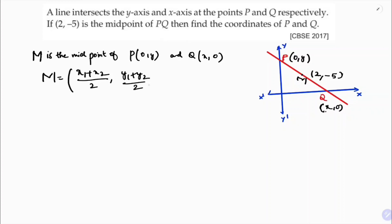y1 plus y2 by 2. So here I'll take these values: x1, y1, x2, y2. The value of M is 2 comma minus 5. So 0 plus x by 2, y plus 0 by 2. Now we need to equate.